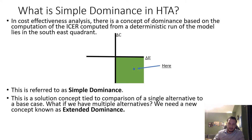This is a solution concept tied to comparing a single alternative to a base case. But what if we have multiple alternatives? How do we rank each of these alternatives compared to each other? We need a new concept known as extended dominance to do this.